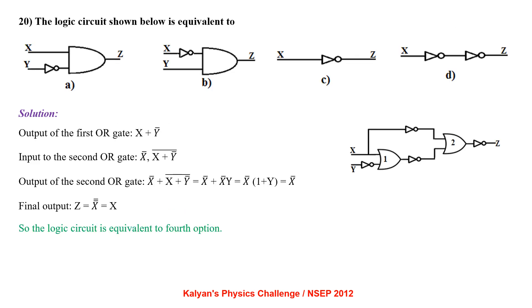The logic circuit shown is equivalent to which gate? Analyzing gate by gate: output of first OR gate is X + Ȳ. Output of second OR gate is (X̄ + X + Ȳ)̄ = X̄(1 + Y) = X̄. Final output Z = X̄̄ = X. So the logic circuit is equivalent to the 4th option.